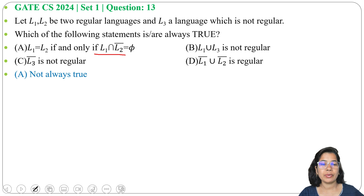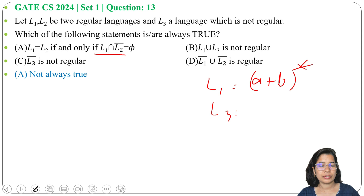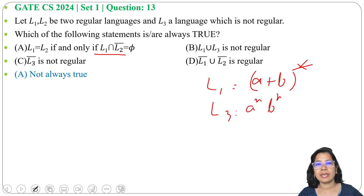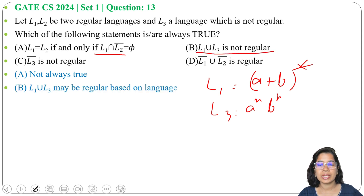Option B: L1 union L3 is not regular. This also depends on the language. Suppose L1 equals the universal language, that is (A+B)* — it accepts all strings over A and B — and L3 equals A^N B^N, equal numbers of A's followed by equal numbers of B's. Then their union is the universal language, which is regular. So Option B is false — the union may or may not be regular depending on the languages.